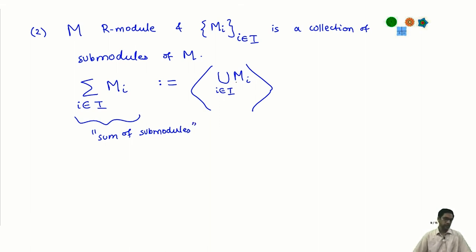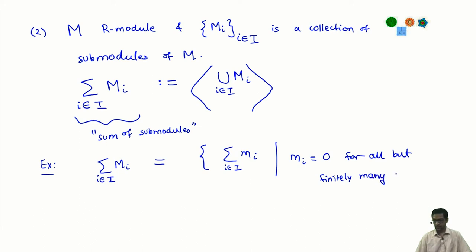It is a submodule because it is the submodule generated by a set. Here is a little exercise: show that the elements of the sum look like the following or prove the following equality that the set of the sum m i comprises precisely the set of elements of the following kind. They look like finite sums, i belonging to i, but I want the sum to be finite. m i should be 0 for all but finitely many i in i and m i s belong to capital M i for all i. It is finitely supported sums or finite sums of elements from each m i. Prove that these two are the same. What we gave as the definition and this alternative description are actually the same set. That is an easy verification.